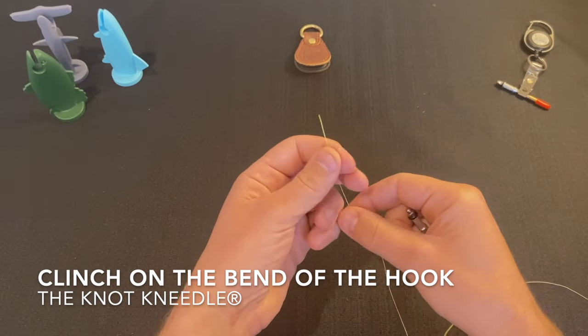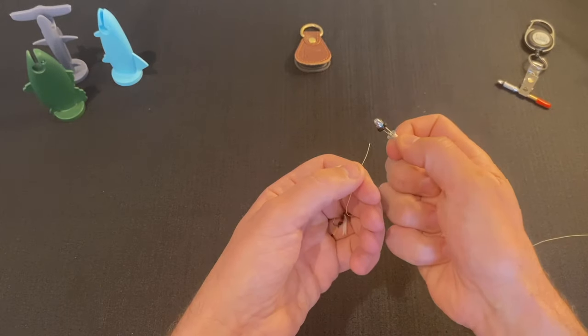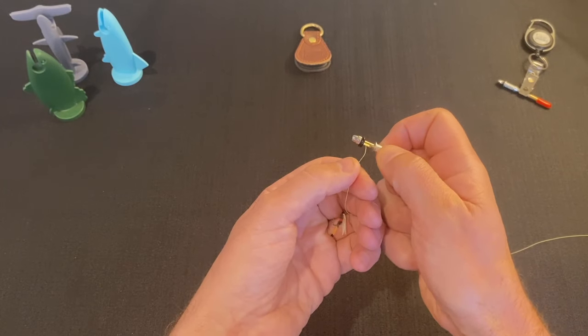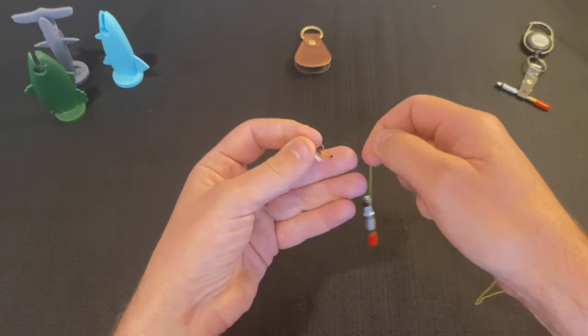Hi, I'm going to show you how to tie a clinch knot to the bend of the hook. The first thing I'm going to do is put the line through the knot needle slot and then I can let it hang there because the knot needle keeps tension on it.